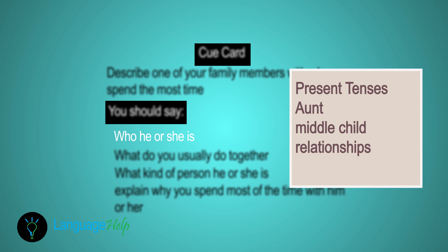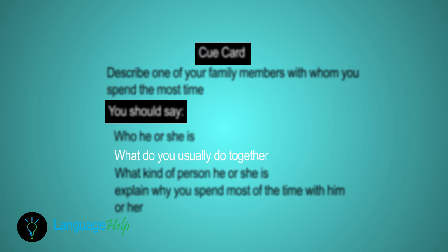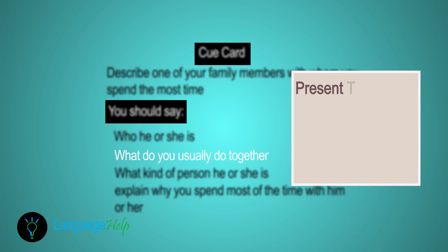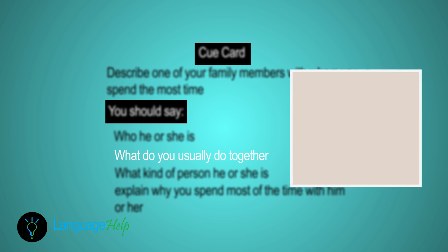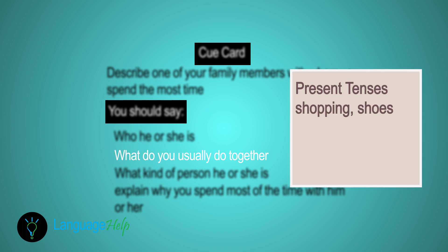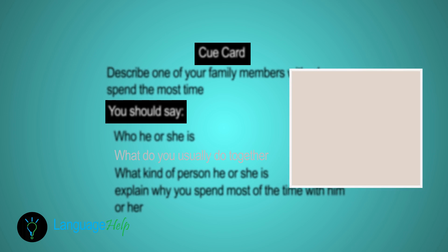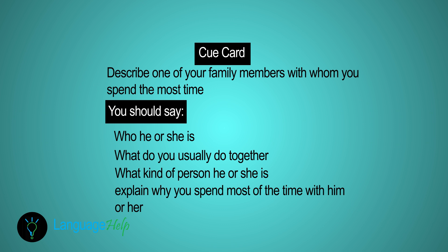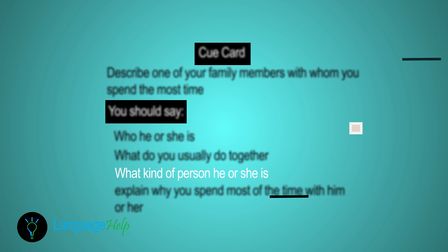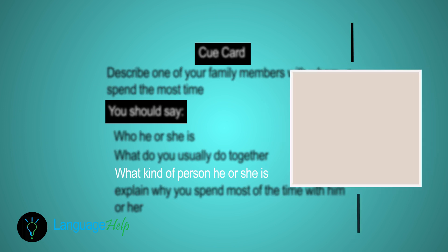The second cue wants us to answer: what do you usually do together? The first step, as always, is to establish the tense — in this case, the present tense. Think of places you go to or activities you do, such as shopping.